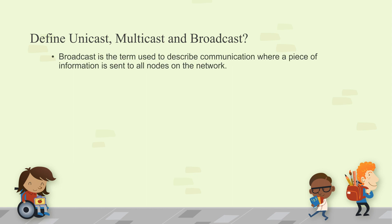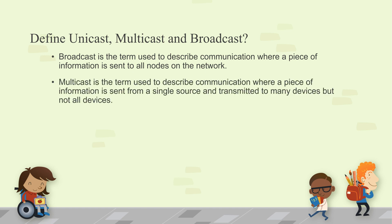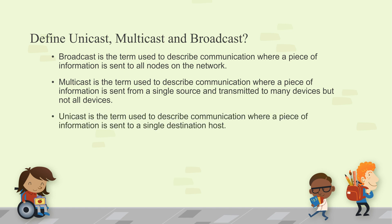Define unicast, multicast, and broadcast. Broadcast is the term used to describe communication where a piece of information is sent to all nodes on a network. Multicast is where information is sent from a single source and transmitted to many devices, but not all devices. Unicast is where information is sent to a single destination host.